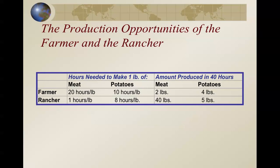Now, this is a very important table. It shows the production opportunities of the farmer and the rancher. It's in two parts: the hours needed to make one pound of meat and potatoes, and the amount produced in 40 hours. For the farmer, it takes 20 hours to make a pound of meat and 10 hours to make a pound of potatoes. For the rancher, one hour to make one pound of meat and 8 hours to make one pound of potatoes.